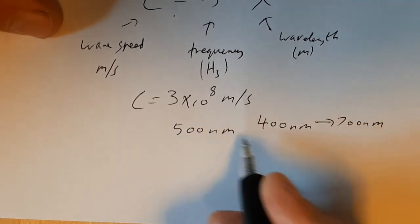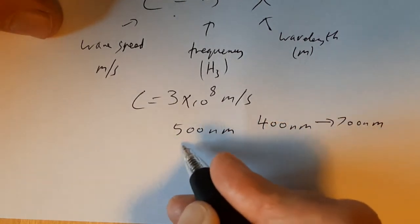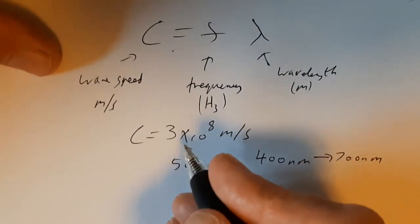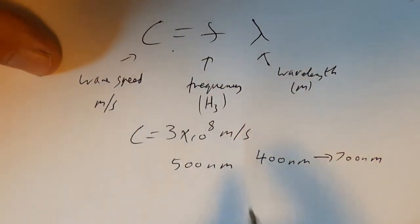And it doesn't say officially anywhere in the specification that you need to know that. I find it incredibly useful. So we're taking 500 nanometers clearly in the visible range. And we're going to ask ourselves the question, what frequency must this light have?